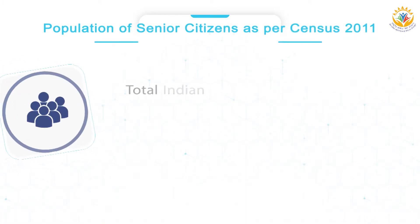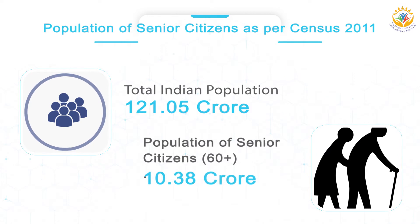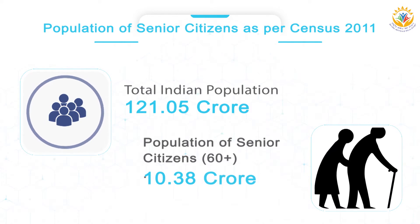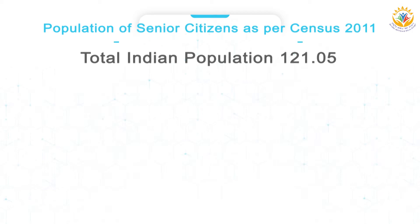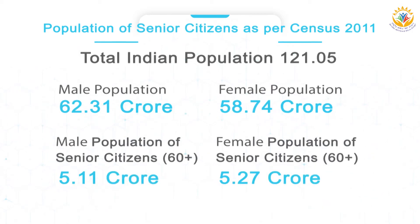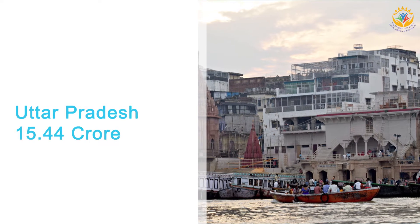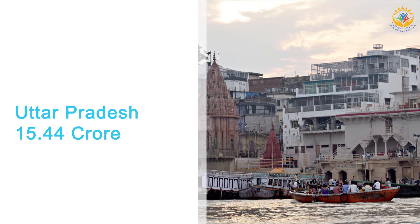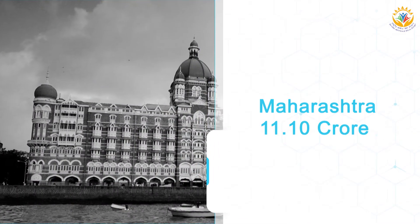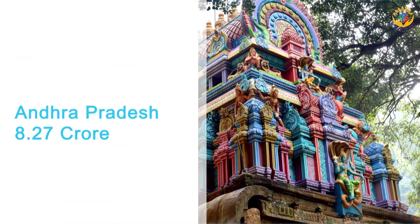As per the 2011 Census, the total population of senior citizens — that is, people aged 60 years and above — is 10.38 crores, of which males were 5.11 crores and females 5.27 crores. The number of senior citizens is highest in Uttar Pradesh at 15.44 crores, followed by Maharashtra at 11.10 crores and Andhra Pradesh at 8.27 crores. Lakshadweep, with 0.05 crores, has the lowest population of people aged 60 and above.